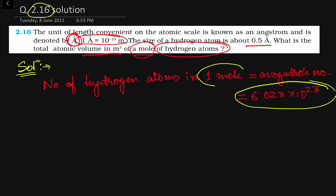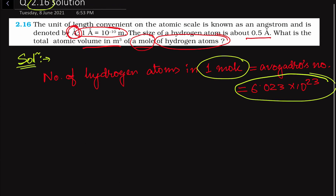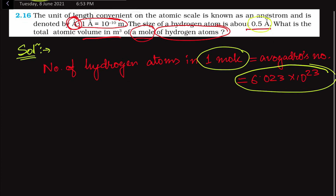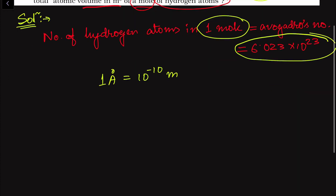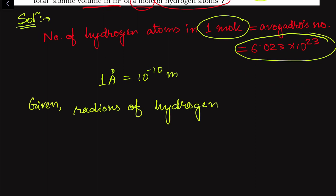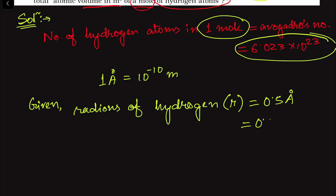We are given that the radius of the hydrogen atom is 0.5 angstrom. Let us express it in meter units. Since one angstrom equals 10 to the power minus 10 meters, the radius r equals 0.5 angstrom, which is 0.5 into 10 to the power minus 10 meters.